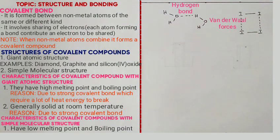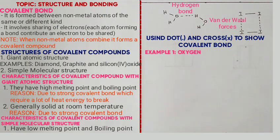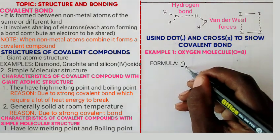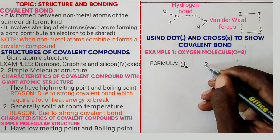Next we want to look at how to use dot and cross diagrams to show how a covalent bond is formed. We will look at two examples: the oxygen molecule and the water molecule. For the oxygen molecule, the first thing you do is write the formula, which is O₂. Then in step 2, you write the electron configuration of the oxygen atom, which is 2.6.